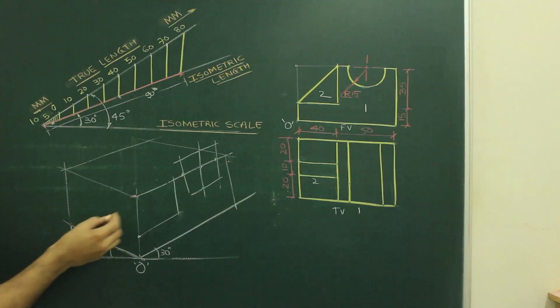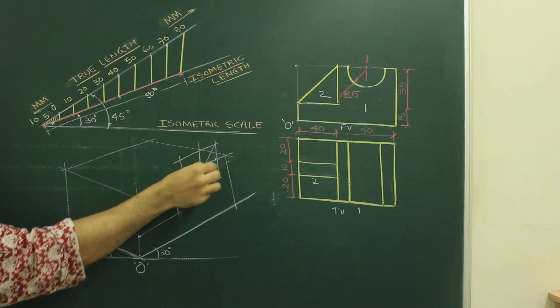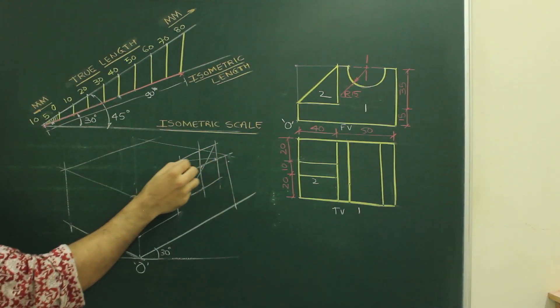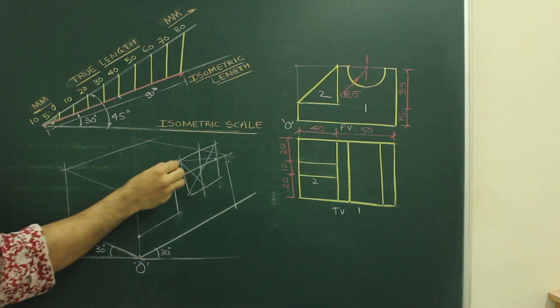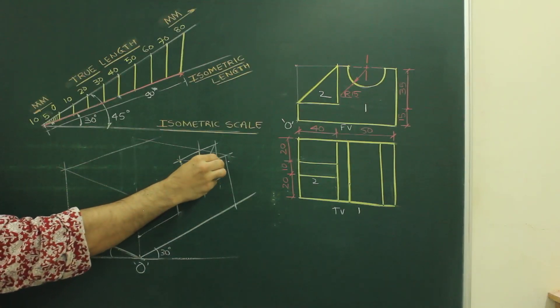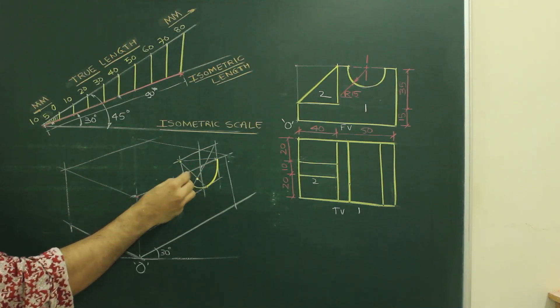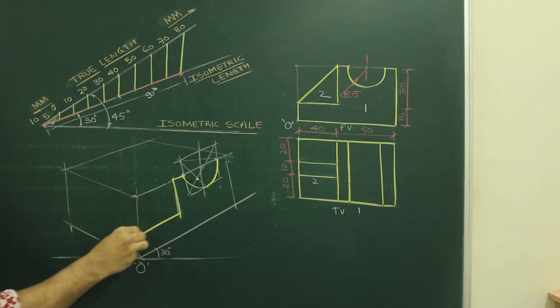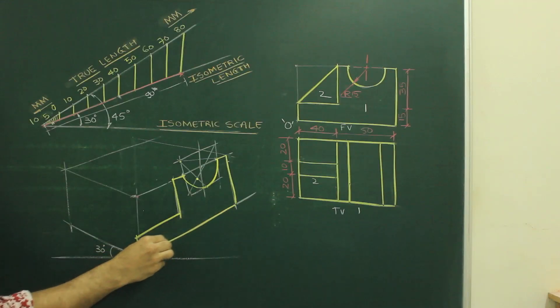After that, we will follow the same procedure. We will draw longest diagonal. From this midpoint, this midpoint. We will draw lines. And from here, 0.1, we can draw this arc. From here, we can draw this arc. And we can complete this. So we got front surface.